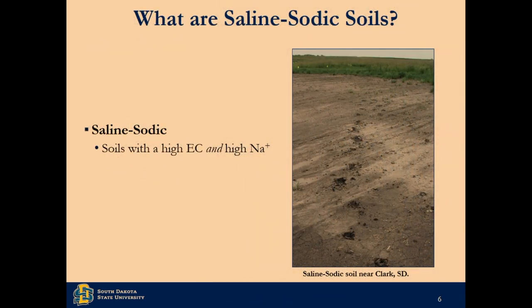You can also have a saline-sodic soil — that is a thing that happens. It's pretty common in South Dakota, particularly eastern South Dakota, which is my focus area. If you're a West River producer, you definitely have saline-sodic soils as well, though my research hasn't taken place West River. It's a problem across the state. Saline-sodic means high EC with high sodium. Does it look like that soil can breathe very well? Those are deer tracks walking through there — infiltration is not great. Any questions on what salinity is versus sodicity?